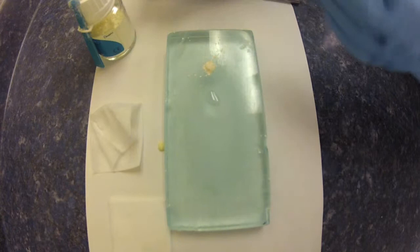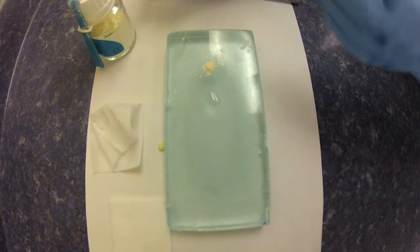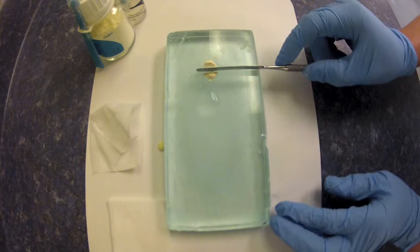Just like the base, we're going to incorporate half of the powder into the liquid. Once it's wetted, we're going to incorporate the second half.